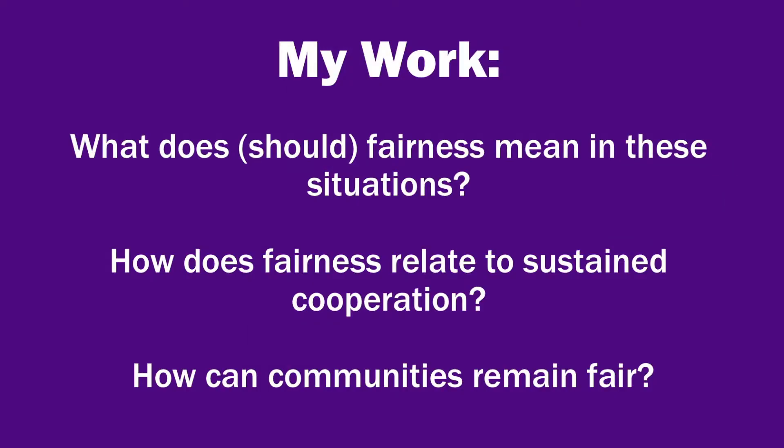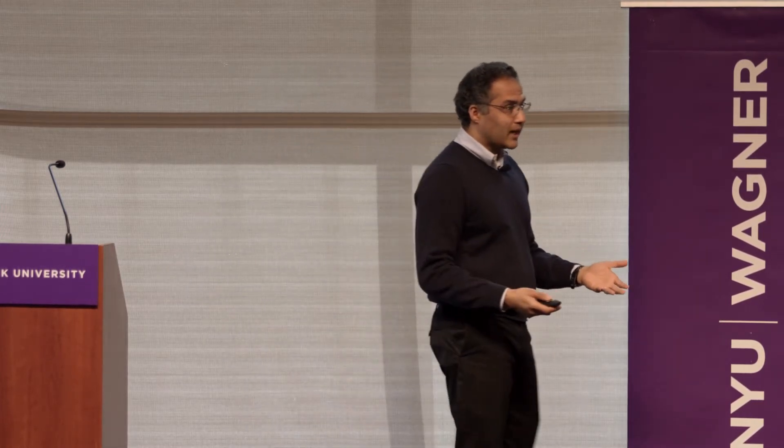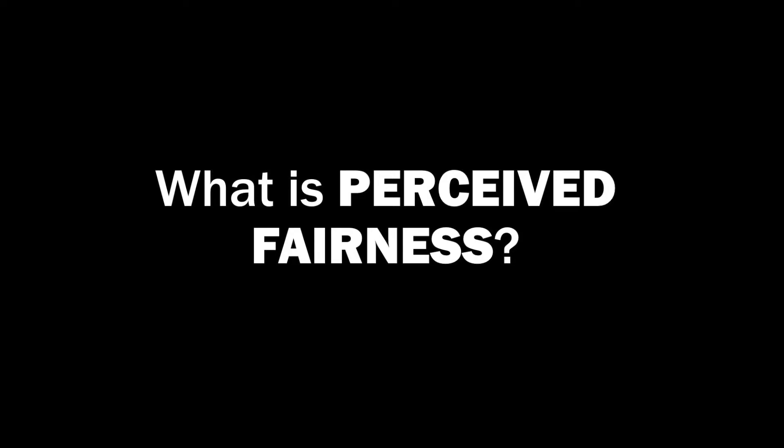This is where my research picks up. I ask: what does and should fairness mean in these situations of community-governed shared infrastructure? How does fairness relate to sustained cooperation — cooperation over time — in the use and maintenance of this infrastructure? And how can communities remain fair? To answer this, I visited these hundreds to thousands of year old irrigation canals at two points in time: between 16 years apart and 37 years apart. And I looked at all of the variables thought to affect communities' ability to continue cooperating. What really mattered over time was perceptions of fairness.